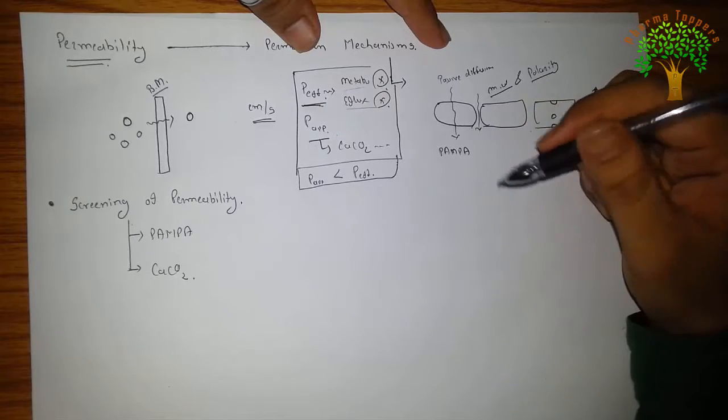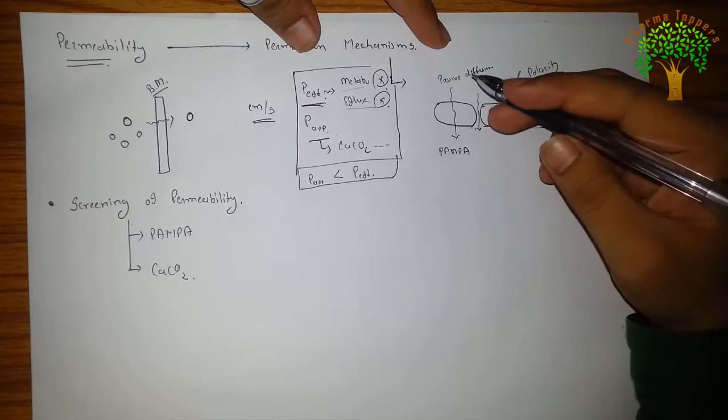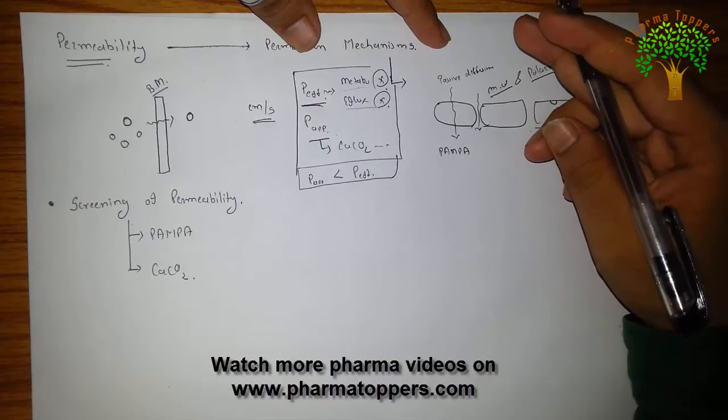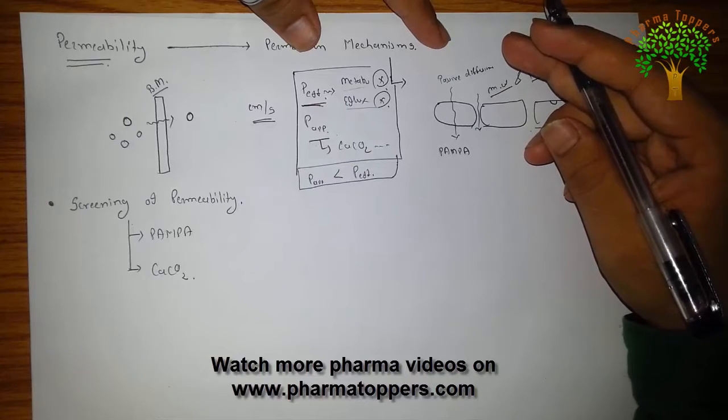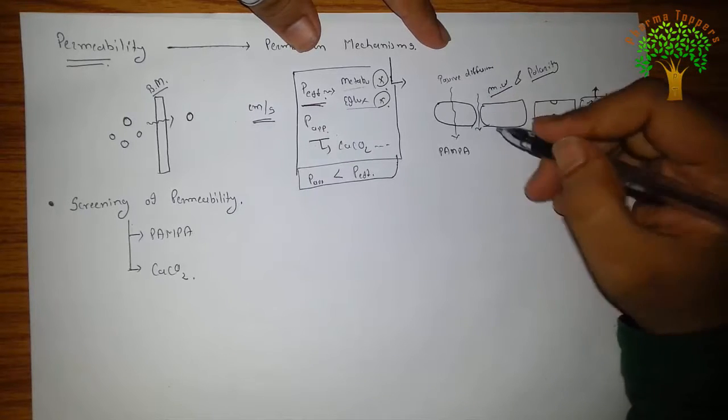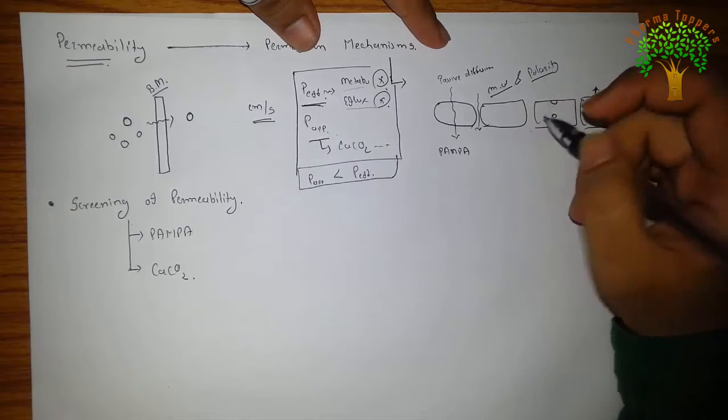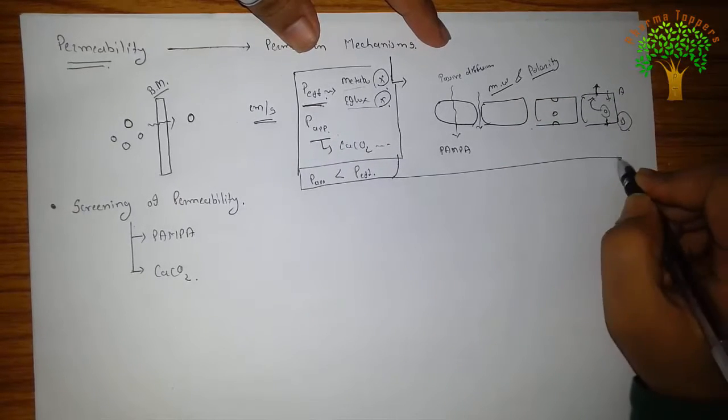Passive diffusion here, mainly the absorption pathway. Then the transcellular pathway, it is a function of hydrophobicity, hydrogen bonding, and ionization. Whereas the paracellular pathway is a function of size state and ionization. So this is all about the permeation mechanisms.